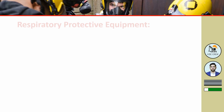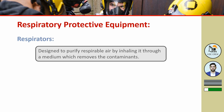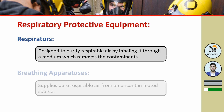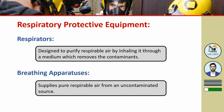There are two basic types of respiratory protective equipment. The first one is respirators. Respirators are designed to purify respirable air by inhaling it through a medium — a filter — which removes the contaminants. The second one is breathing apparatus. Breathing apparatus supplies pure respirable air from an uncontaminated source.